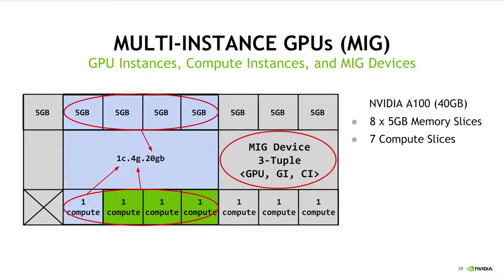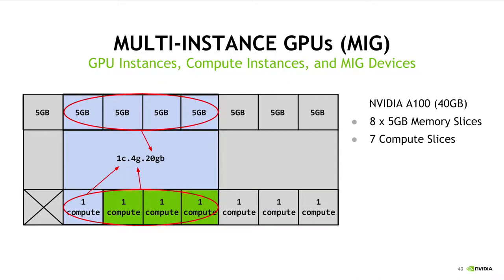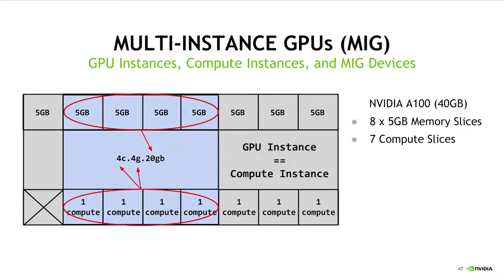A MIG device is represented as a three-tuple of the top-level GPU where the MIG device has been created, its GPU instance, and its compute instance. A compute instance may be created to consume one, two, three, or four compute slices. In the special case where a single compute instance consumes all of the compute slices of its wrapping GPU instance, we talk about the GPU instance equaling the compute instance, and drop the compute instance portion from the canonical naming scheme. Dropping this prefix is unambiguous because these names refer to the actual MIG devices they represent.